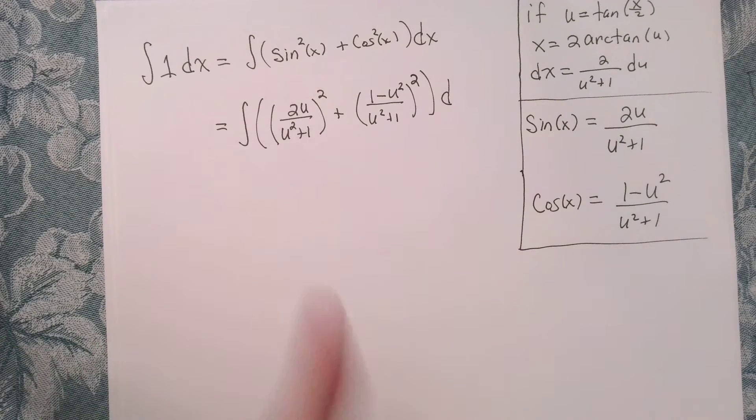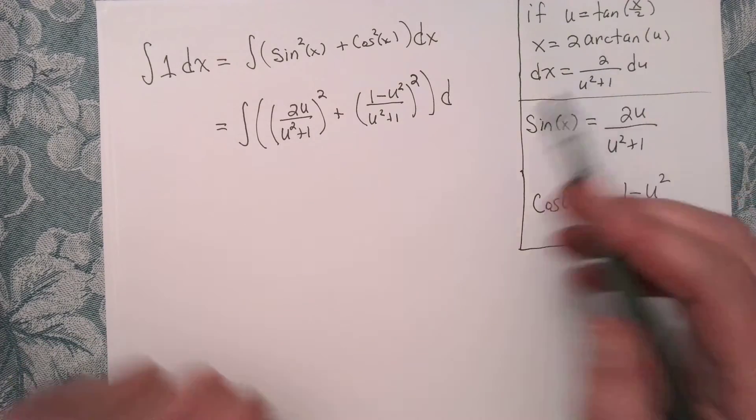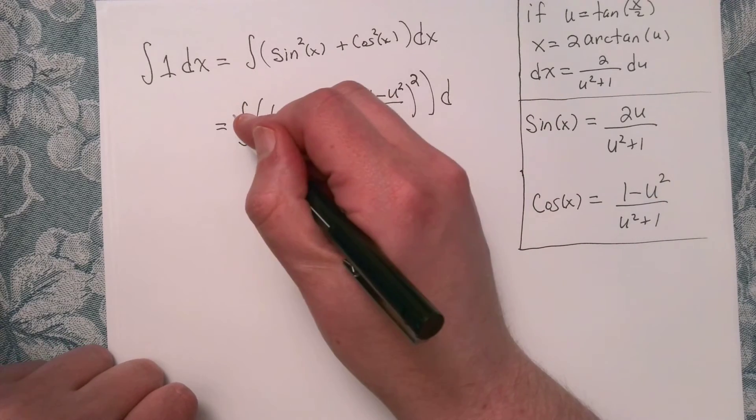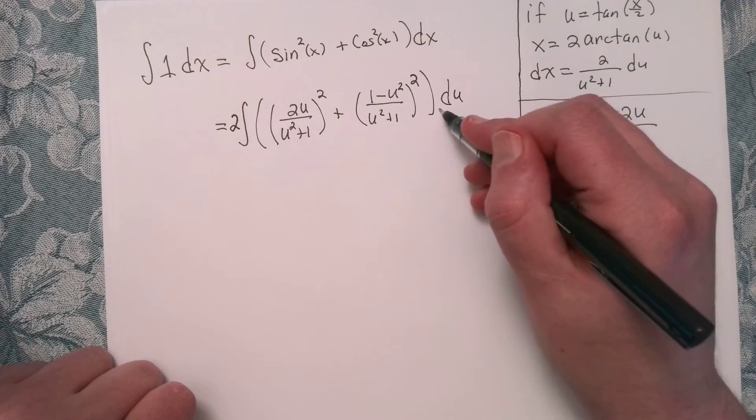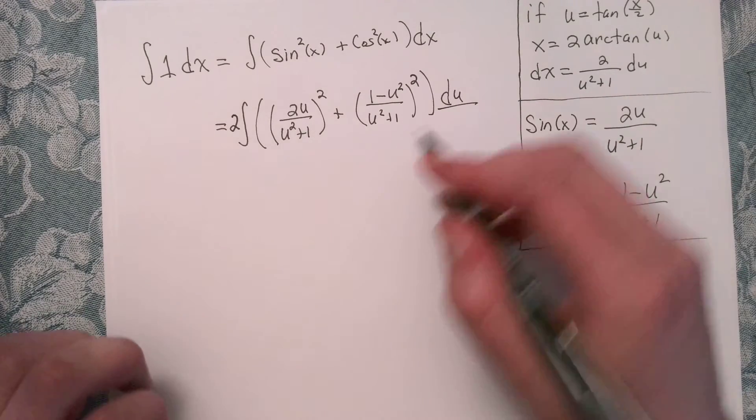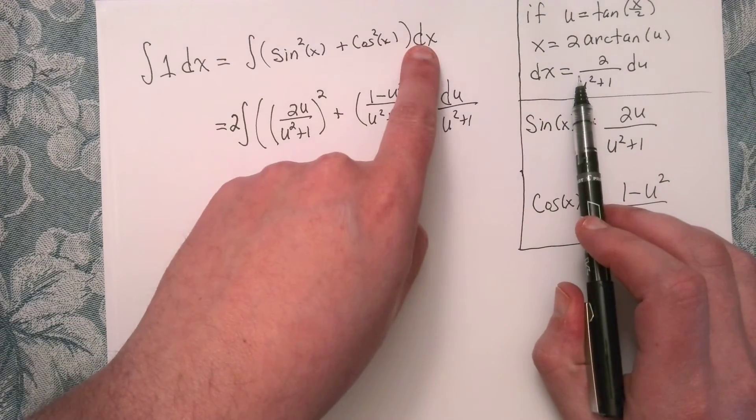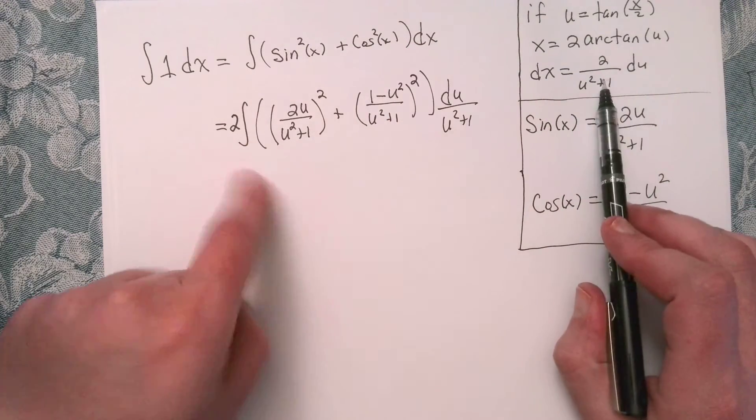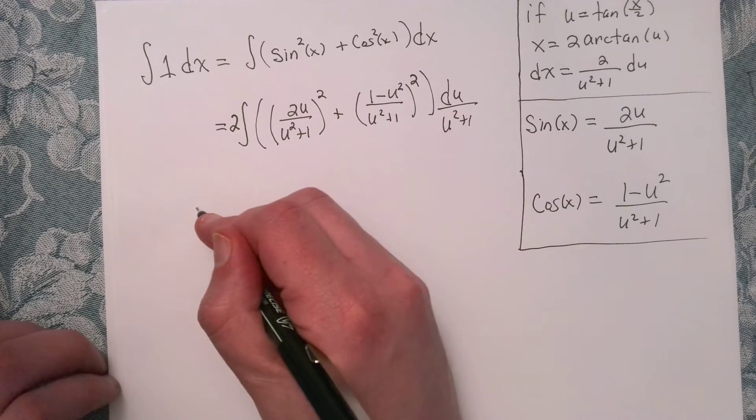And we want to replace dx. So dx is, we said, exactly this quantity, so it's 2 times du over u squared plus 1. Okay, so yeah, we're able to replace dx right here. I just brought the 2 out in front, which is fine. So now let's do a little bit of algebra and see what we can do here.